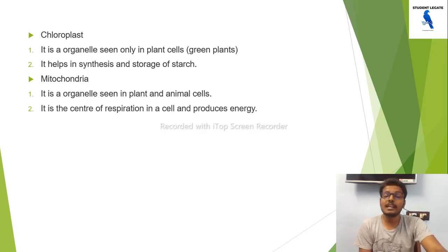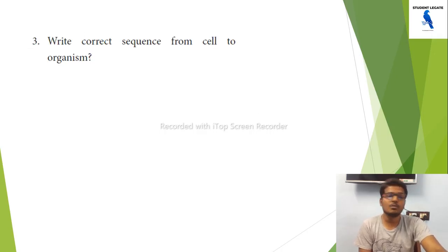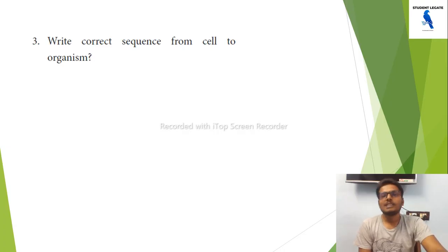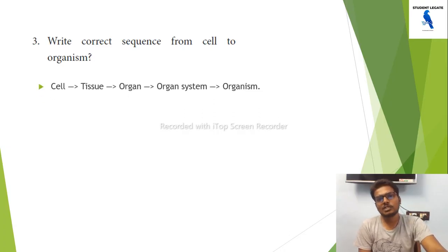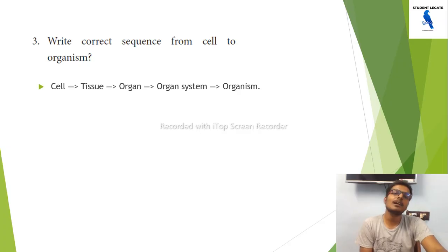Write the correct sequence from cell to organism. The sequence is: cell to tissue, tissue to organ, organ to organ system.